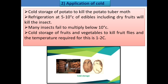The next technique is application of cold. Many insects do not survive well or are killed when you reduce the temperature. Cold storage facilities are now available — storing potatoes in cold storage helps reduce the attack of potato tuber moth, which is the major storage pest of potato. Refrigeration at 5 to 10 degrees centigrade of edible products including dry fruits will kill different insect pests. Many insects fail to multiply below 10 degrees centigrade. Cold storage for fruits and vegetables at 1 to 2 degrees centigrade also helps kill fruit flies.